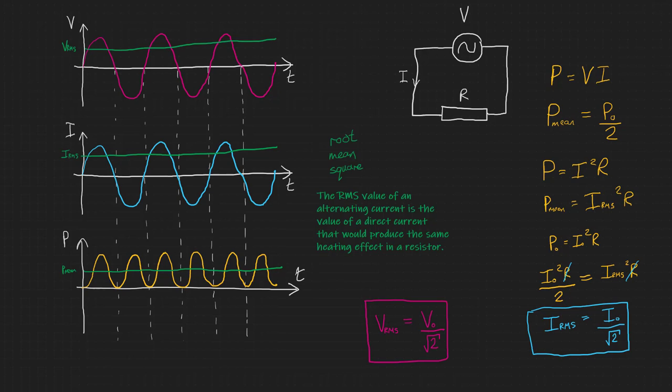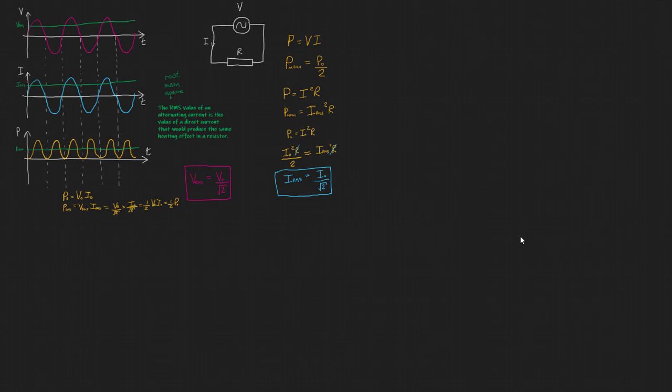since we know that P0 is equal to V0 I0, P RMS should be equal to V RMS multiplied by I RMS. Gives us V0 over root 2 multiplied by I0 over root 2, which gives us a half times V0 I0 or a half P0. Let's end with a quick example.